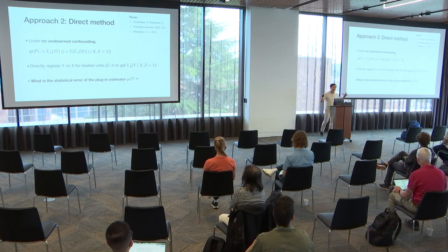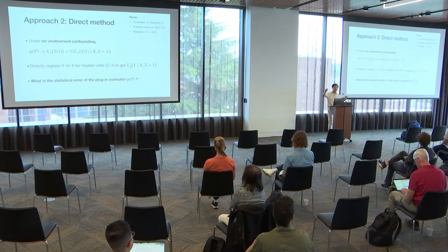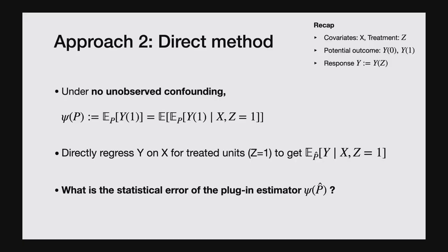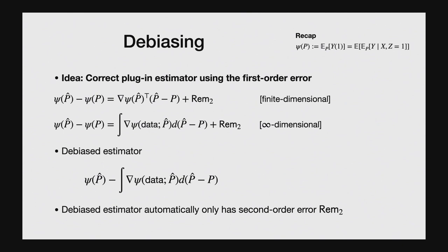I want to combine the best of both worlds. The direct method works well if I can predict outcomes accurately; the importance-weighting method works well if I can estimate the importance weights accurately. To combine them, I'll carefully think about the statistical error of the plug-in estimator. Here I have a statistical functional, and p-hat is my empirical distribution — this is my statistical error. If I write it this way, I'm tempted to take the Taylor expansion of this statistical functional, giving me the first-order Taylor expansion.